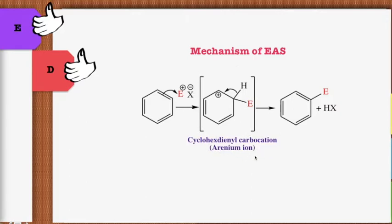The reaction proceeds via an intermediate called the arenium ion or cyclohexadienyl carbocation. This arenium ion does not have aromaticity, so in order to restore aromaticity there is breakage of the C–H bond, which leads to the formation of the electrophilic substituted product. The proton then combines with the nucleophilic portion of the electrophilic reagent to give an acid or other byproduct.